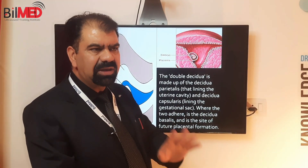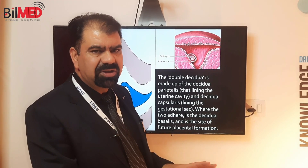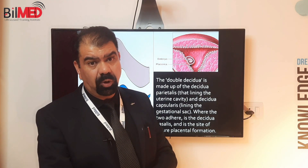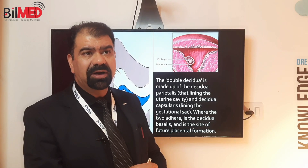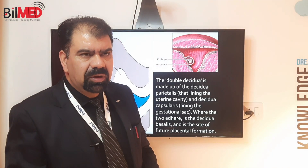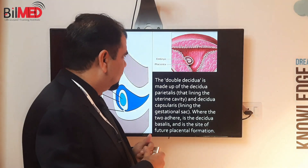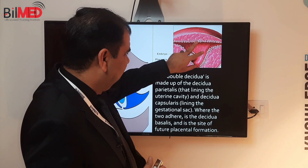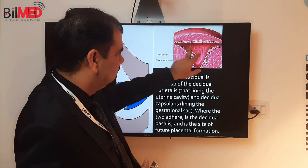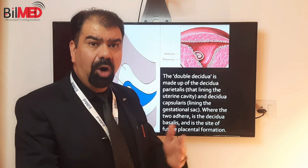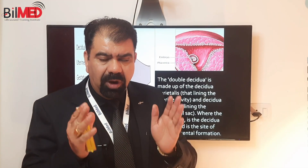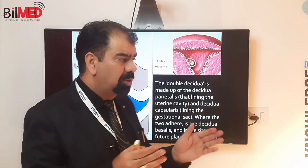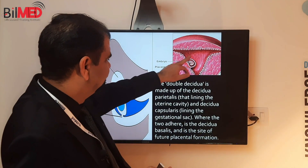This is the easy way to understand the double decidual sign. Why should I know about this? Now, between these two deciduas there is a cavity — this is actually the unobliterated uterine cavity. It is because of this unobliterated uterine cavity that I am seeing two distinct deciduas.